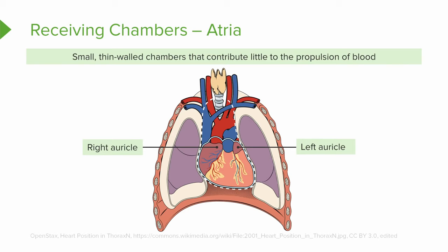Starting with our receiving chambers, we notice that the atria are small, thin-walled chambers that contribute very little to the propulsion of blood. Within these chambers we have the auricles, which are appendages that increase the volume of the atria.